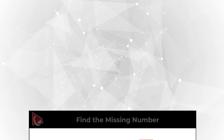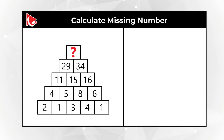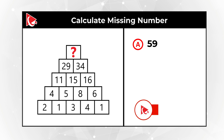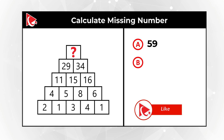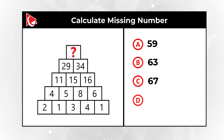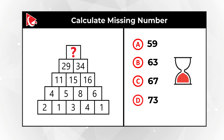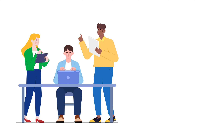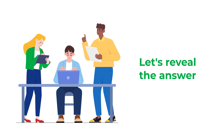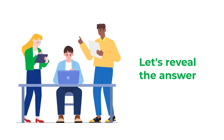You have 4 different choices: choice A – 59, choice B – 63, choice C – 67, and choice D – 73. Give yourself maybe 10 to 15 seconds, maybe a little bit longer, to see if you can answer this question. Did you solve it? Was it hard for you? Let's move forward, and I'll share with you my solution. But obviously, if you have a better way to solve it, please make sure to post it in comments.